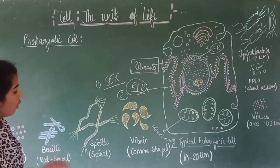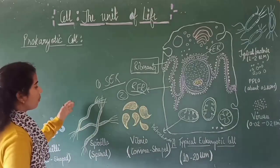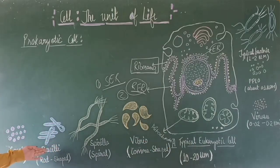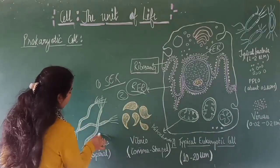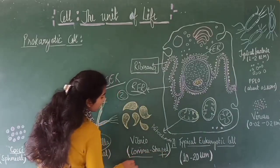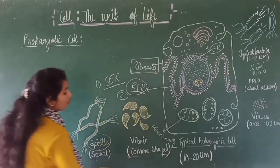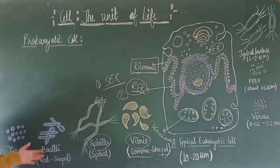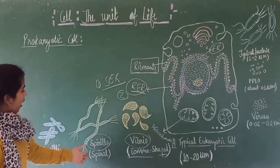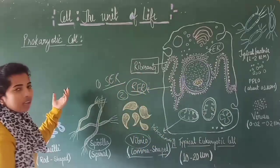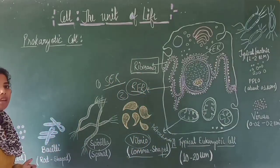Bacteria are divided into four groups on the basis of their shape. First is coccus, which is spherical-shaped. Second is bacillus, which is rod-shaped. Third is spirillum, which is spiral-shaped. And comma-shaped bacteria are known as vibrio. On the basis of their shape, bacteria are mainly classified into four groups: coccus, bacillus, spirillum, and vibrio.